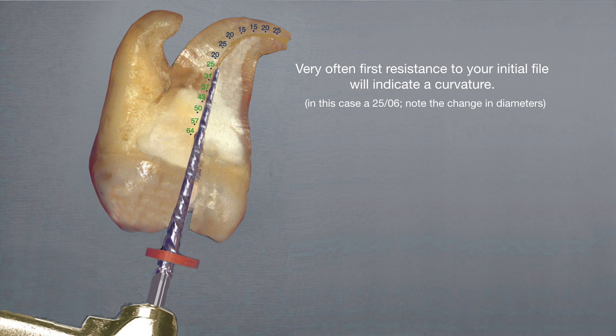Very often, first resistance to your initial file will indicate a curvature. In this case, a 2506. Now note the change in diameters where the file has engaged the canal.